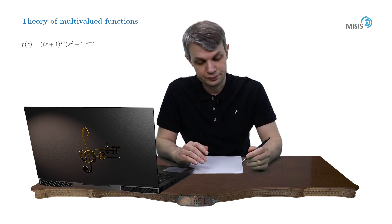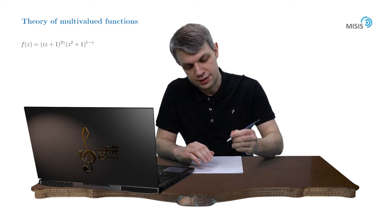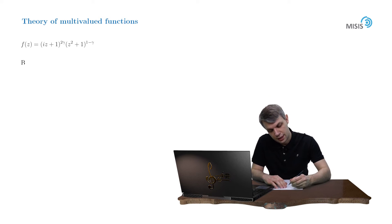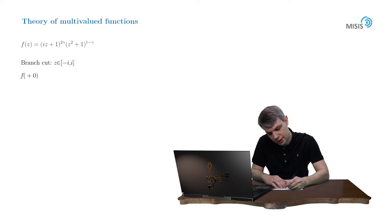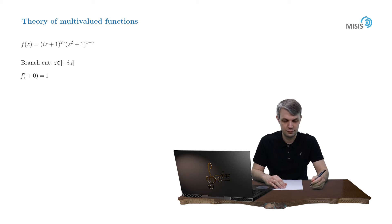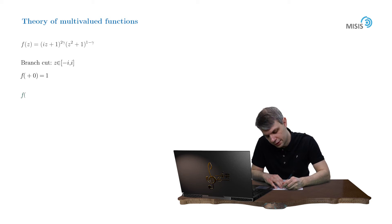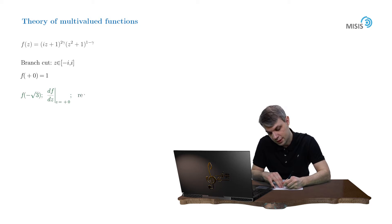The function is in front of you, and its regular branch is fixated by the following condition. The branch cut is a segment from negative i to i, and f is equal to 1 at the reference point. The assignment is as follows: we will find the value of this function at point negative square root of 3, also we'll find the derivative of this function at point plus zero, and its residue at infinity.